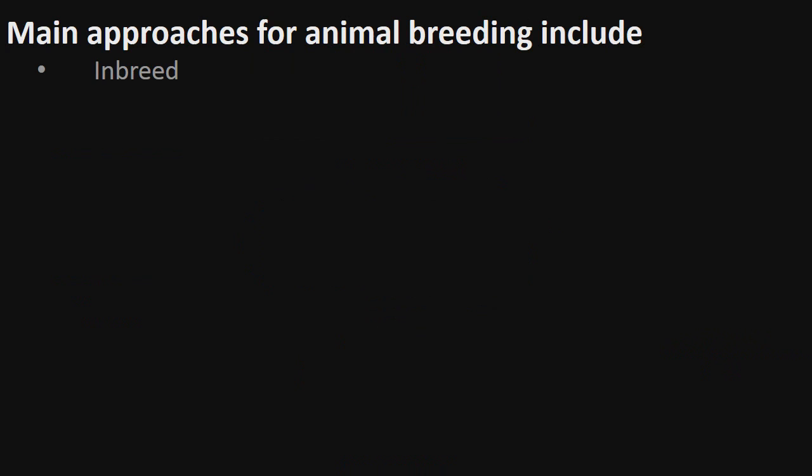The conventional animal breeding methods include inbreeding, outcrossing, and hybridization.